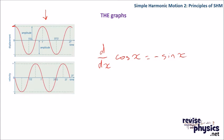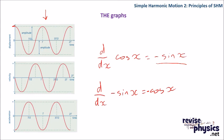Let's say I now wanted acceleration. Well, I just have to differentiate my velocity function. So I need to differentiate my minus sine x. Differentiating minus sine x gives me a minus cos x. So those are my three main graphs, and you're expected to be able to draw these.